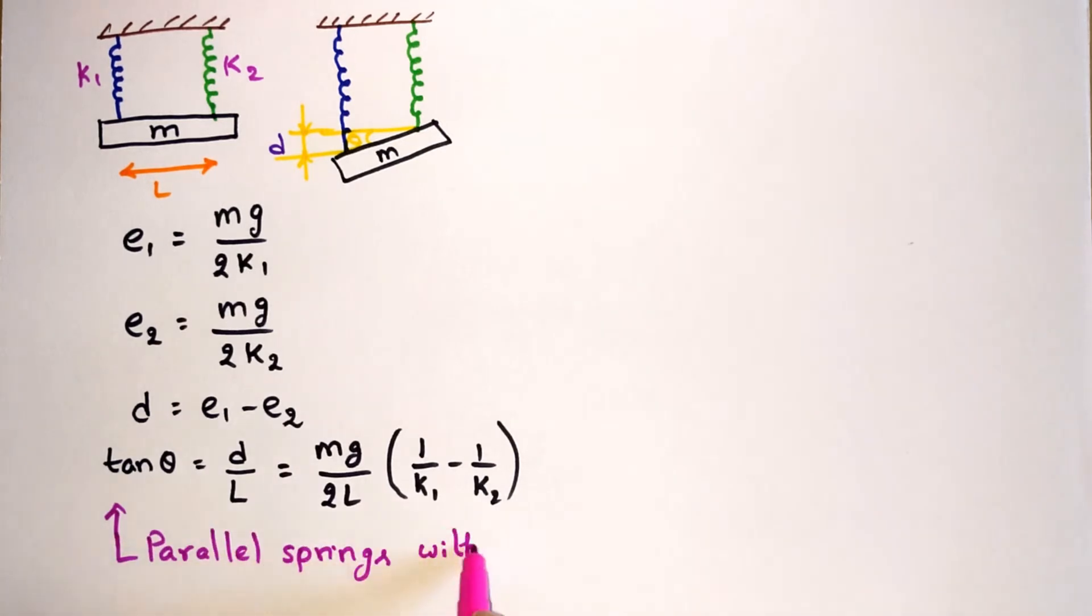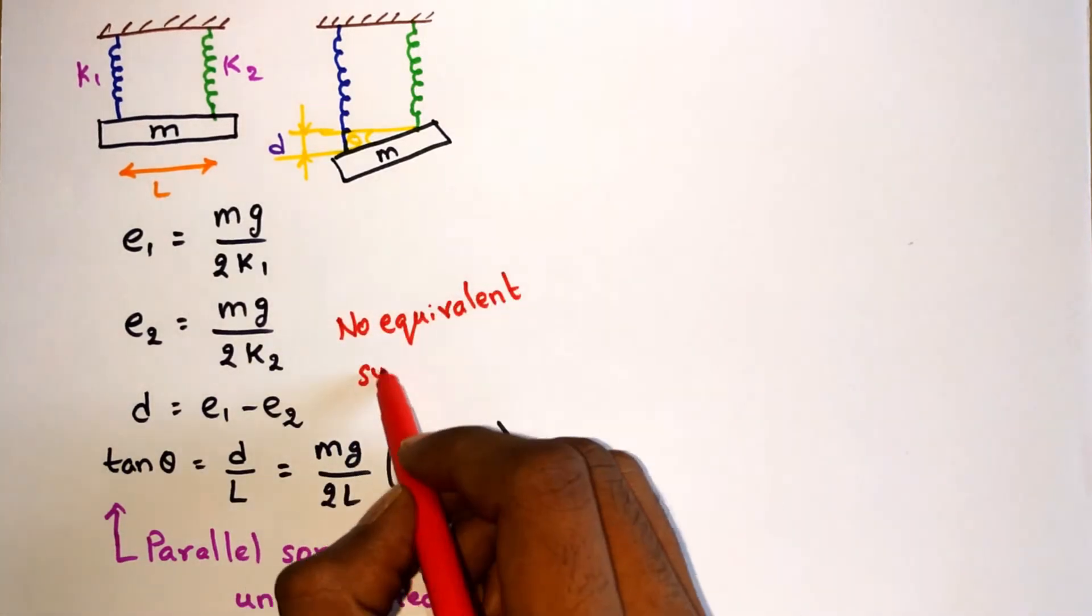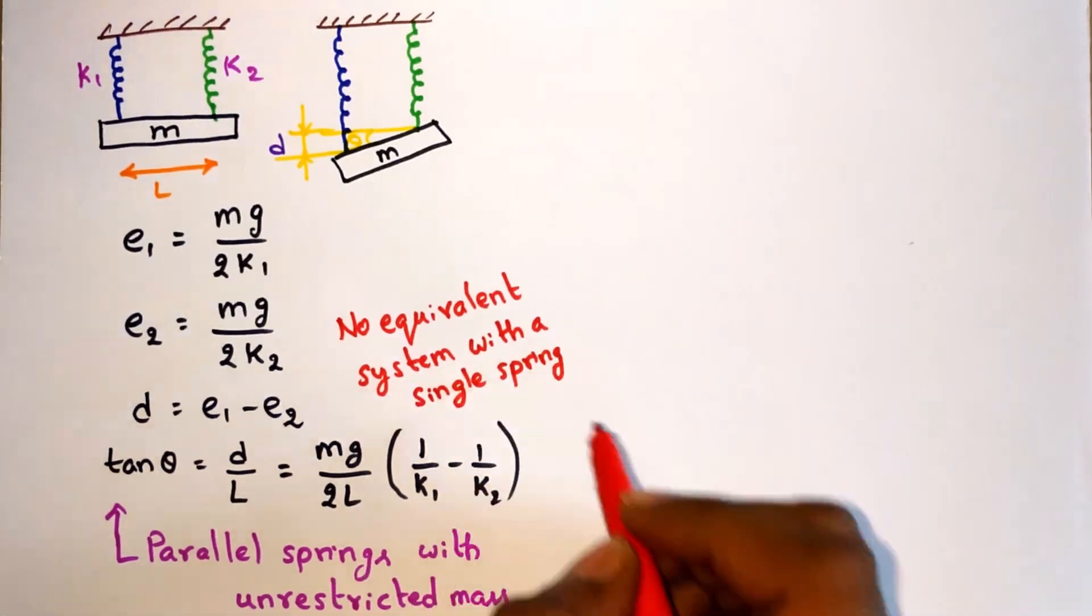So when springs with unequal spring constants are connected in parallel to a freely hanging mass, the springs will have unequal elongations. For these kinds of systems, an equivalent spring-mass system cannot be constructed with a single spring.